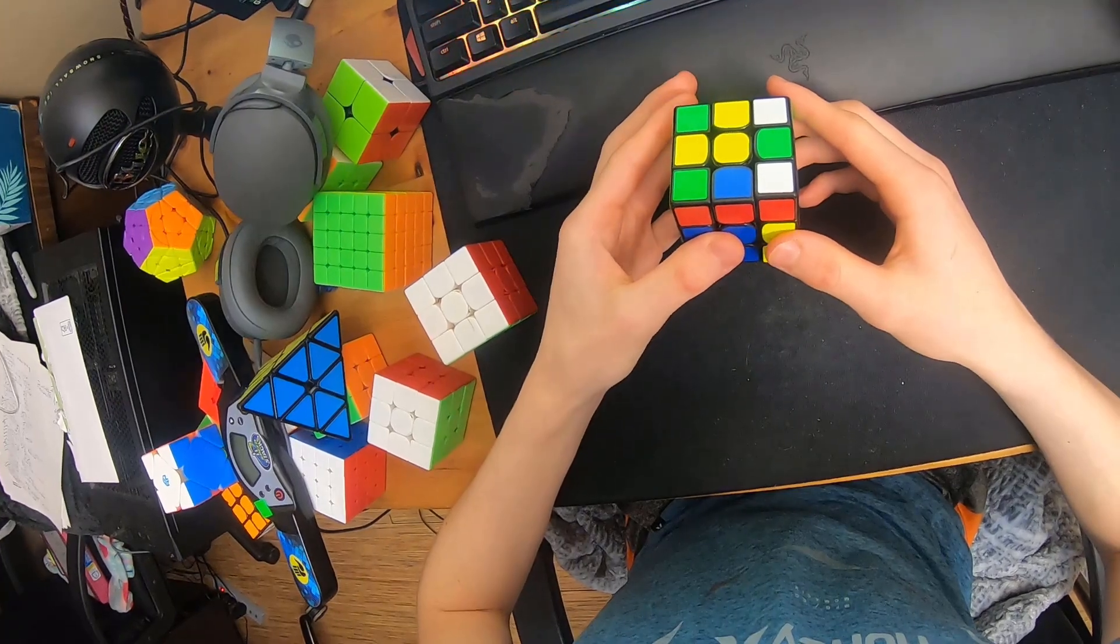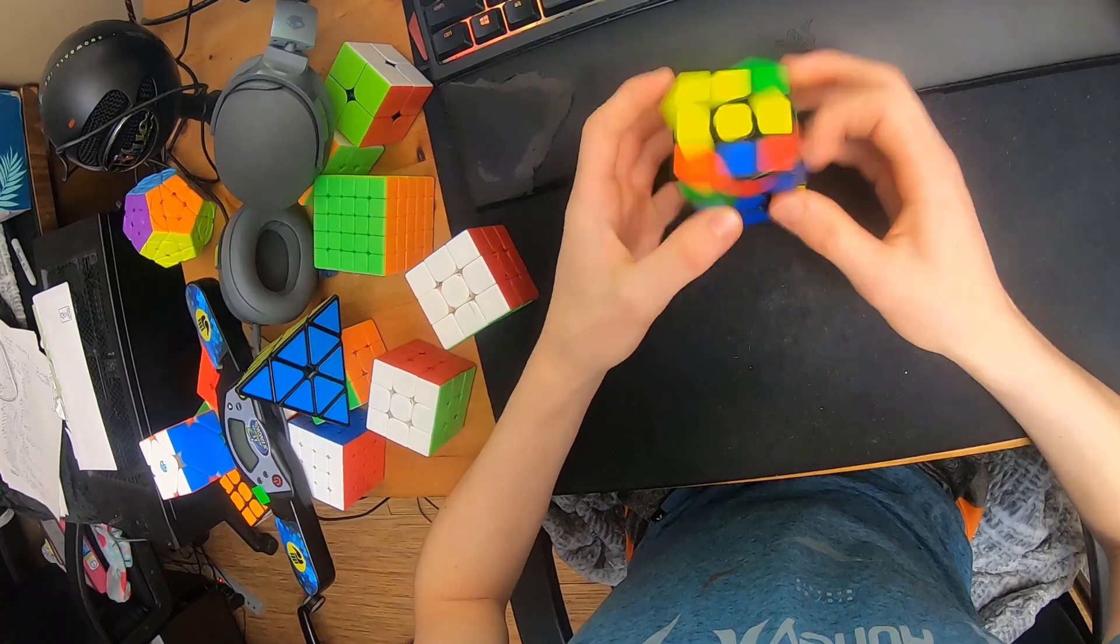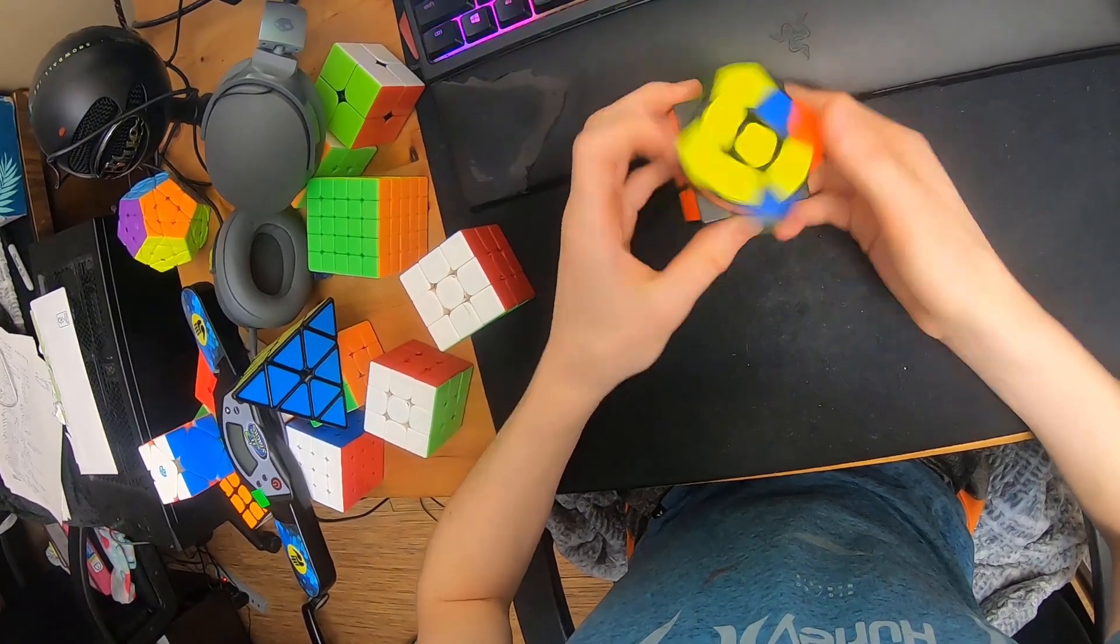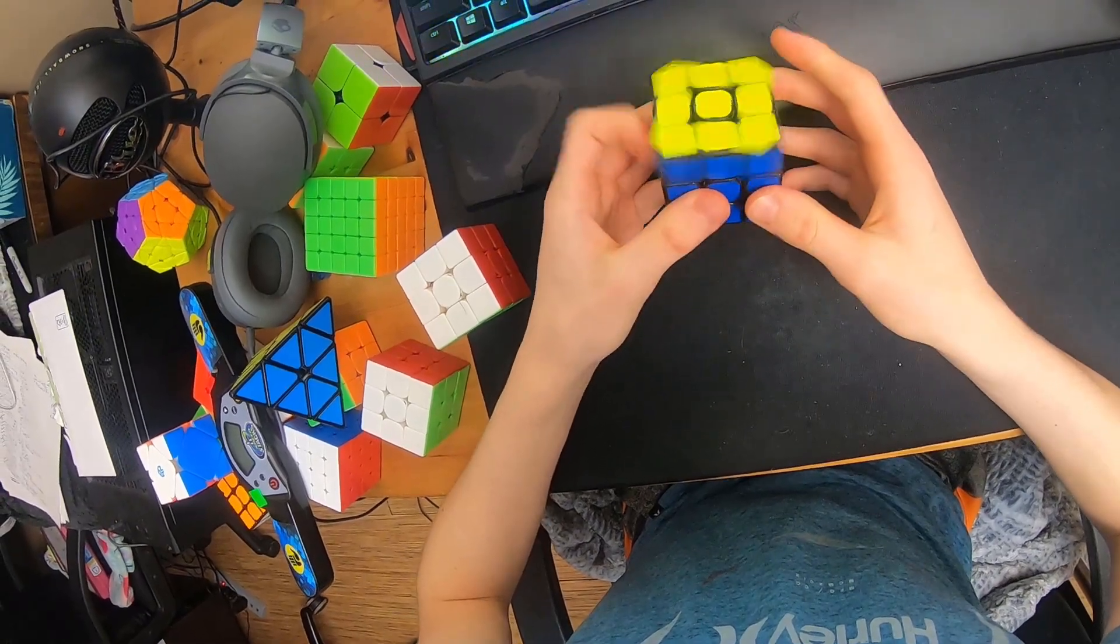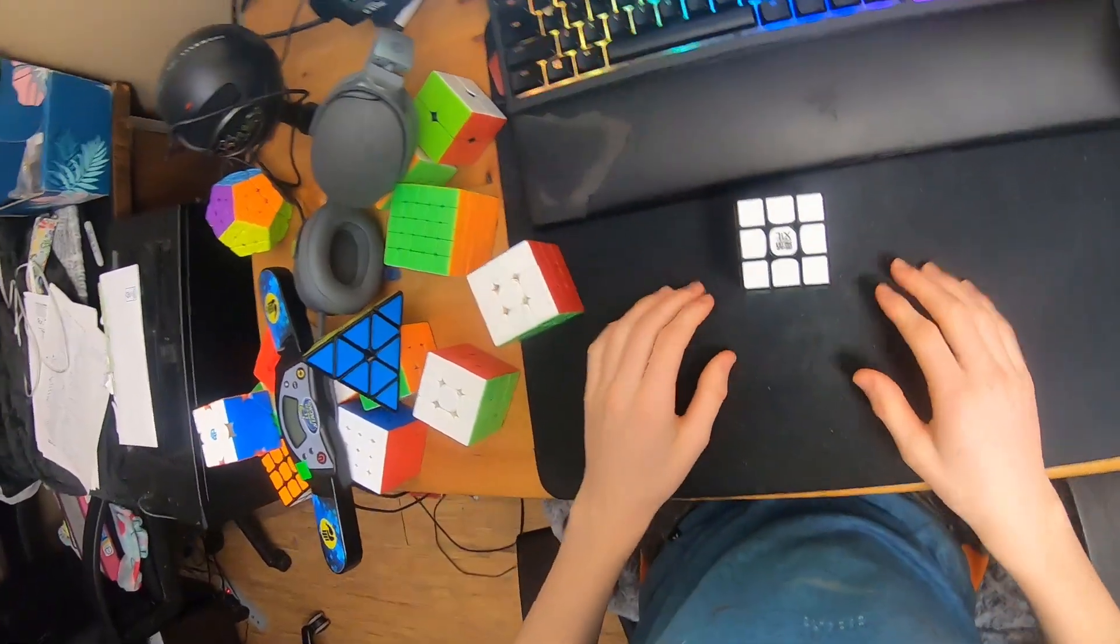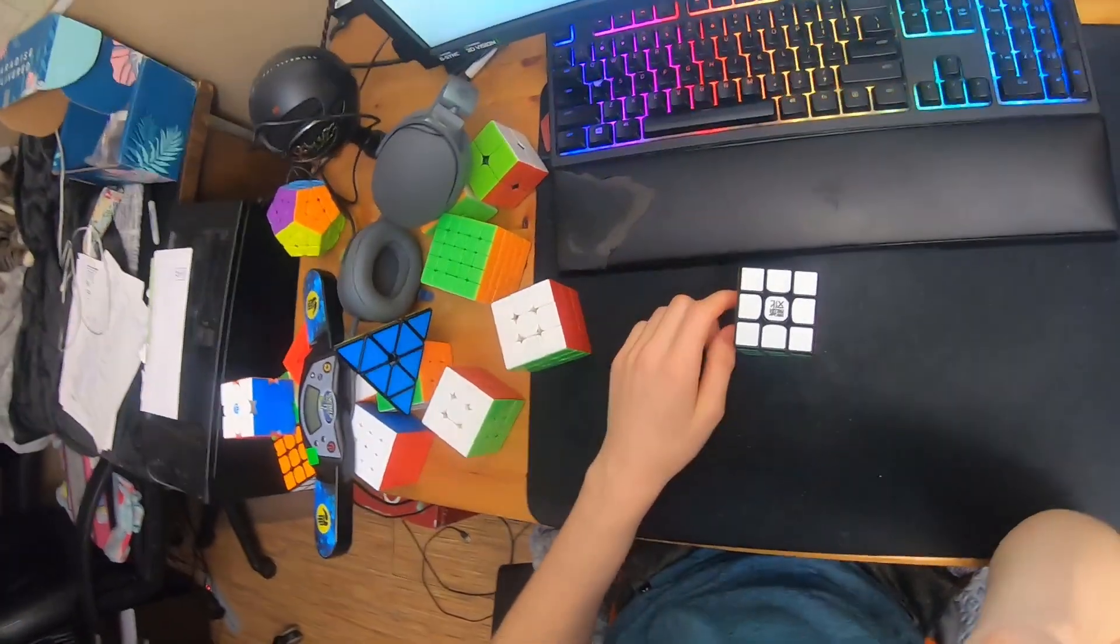I can spam with r-u, so I'm going to start with this, that one, and then these two, and then actually I have a winter variation here, and then a PLL skip. That was 3.81 seconds, so around 10.2 TPS.